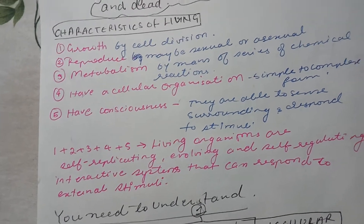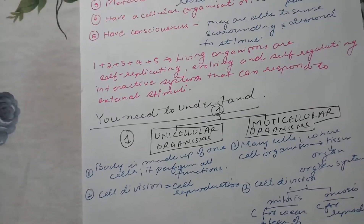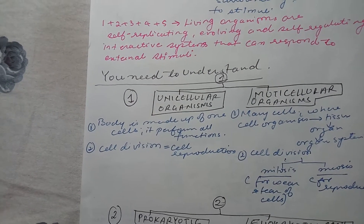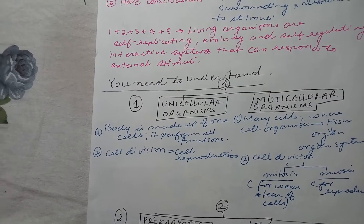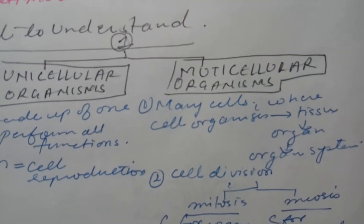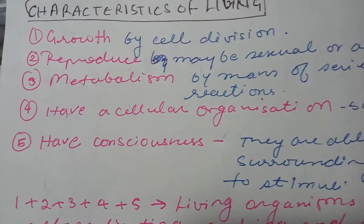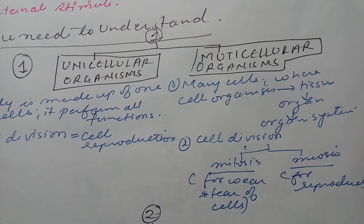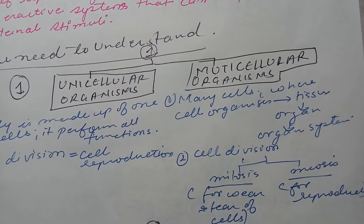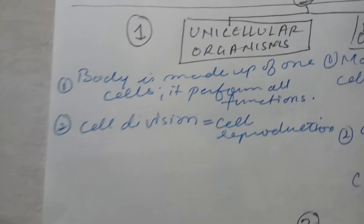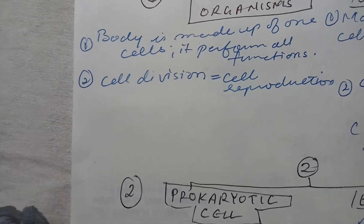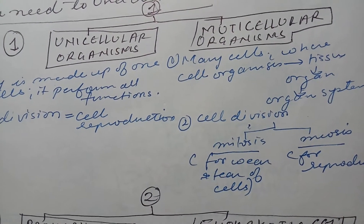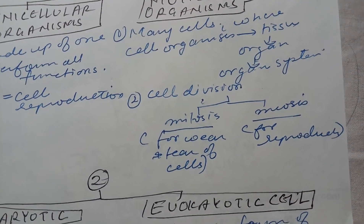You also need to understand unicellular and multicellular organisms. Unicellular organisms have a body made up of only one cell, and that single cell performs all functions. Multicellular organisms have many cells that are organized — cellular organization exists — and each cell has a specific function. In unicellular organisms, cell division means the cell is reproducing. In multicellular organisms, cell division does not necessarily mean reproduction.